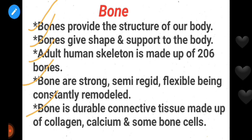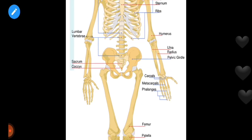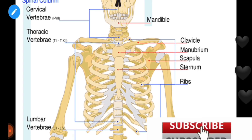Durable means that if there is pressure on our bones, they can withstand it. This bone is made up of collagen. Collagen is like a protein — collagen provides flexibility to the bone. Calcium provides hardness. Specialized bone cells include osteoblasts, osteocytes, and osteoclasts.